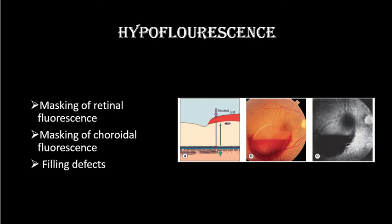The causes of hypofluorescence include masking of retinal fluorescence, masking of choroidal fluorescence, and filling defects. Masking of retinal fluorescence is seen with pre-retinal blood — we cannot see the filled retinal blood vessels and the choroidal fluorescence is also blocked. So pre-retinal blood causes hypofluorescence visible on fundus fluorescent angiography.